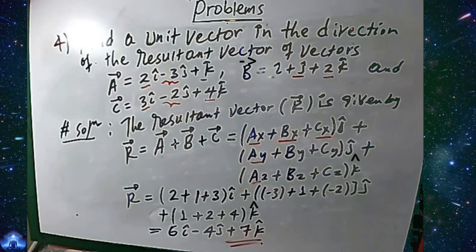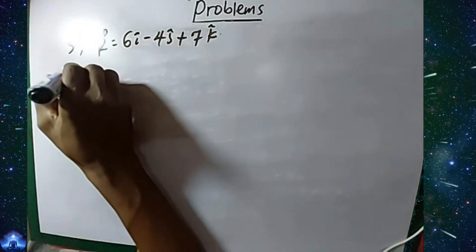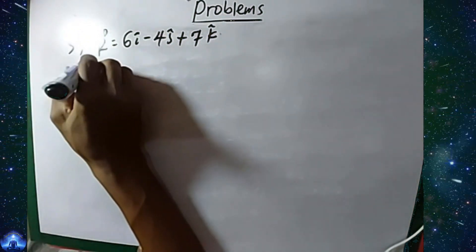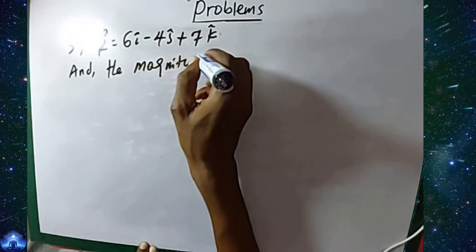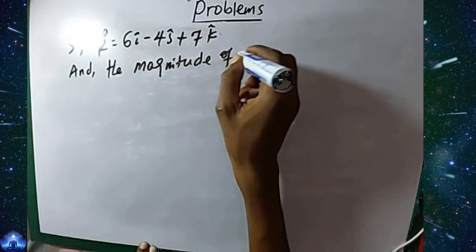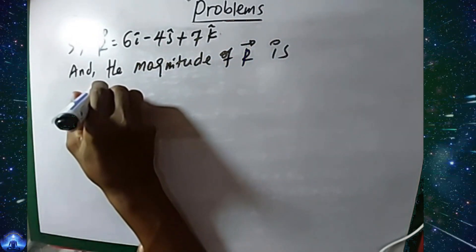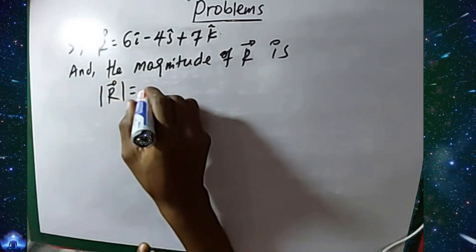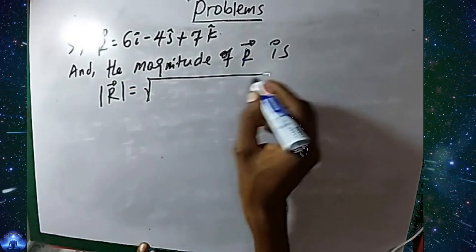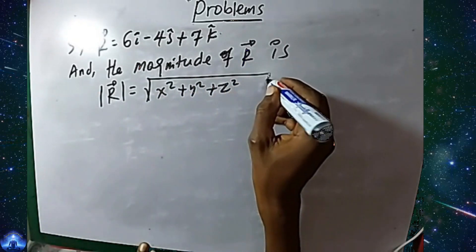This is the resultant vector r, which equals 6i minus 4j plus 7k. Now, the magnitude of the resultant vector r equals the square root of x squared plus y squared plus z squared.